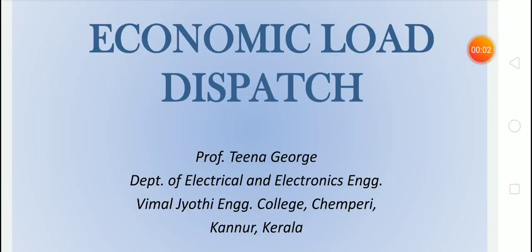In this class, we can discuss economic load dispatch. In a power system, there will be a number of power plants and each power plant will have several generating units. The total load on the system varies from time to time. The economic dispatch problem determines the power output of each power plant and each generating unit within a power plant. In each area or state, there will be dispatch centers where the generation from each power plant is determined.